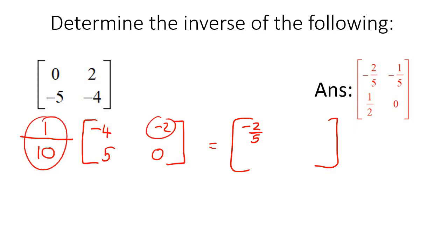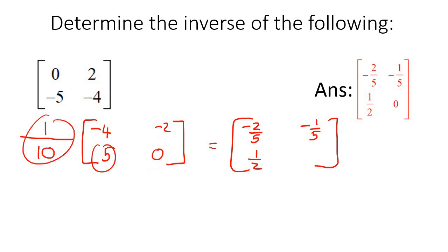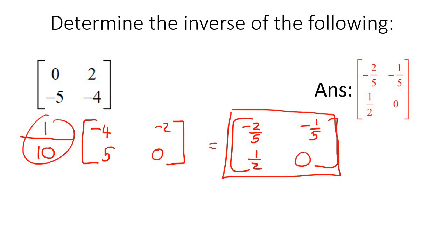Continuing: 1/10 times negative 2 is negative 2/10, which simplifies to negative 1/5. Then 1/10 times 5 is 5/10, which is the same as 1/2. And 1/10 times 0 is just 0. So that is your inverse matrix.